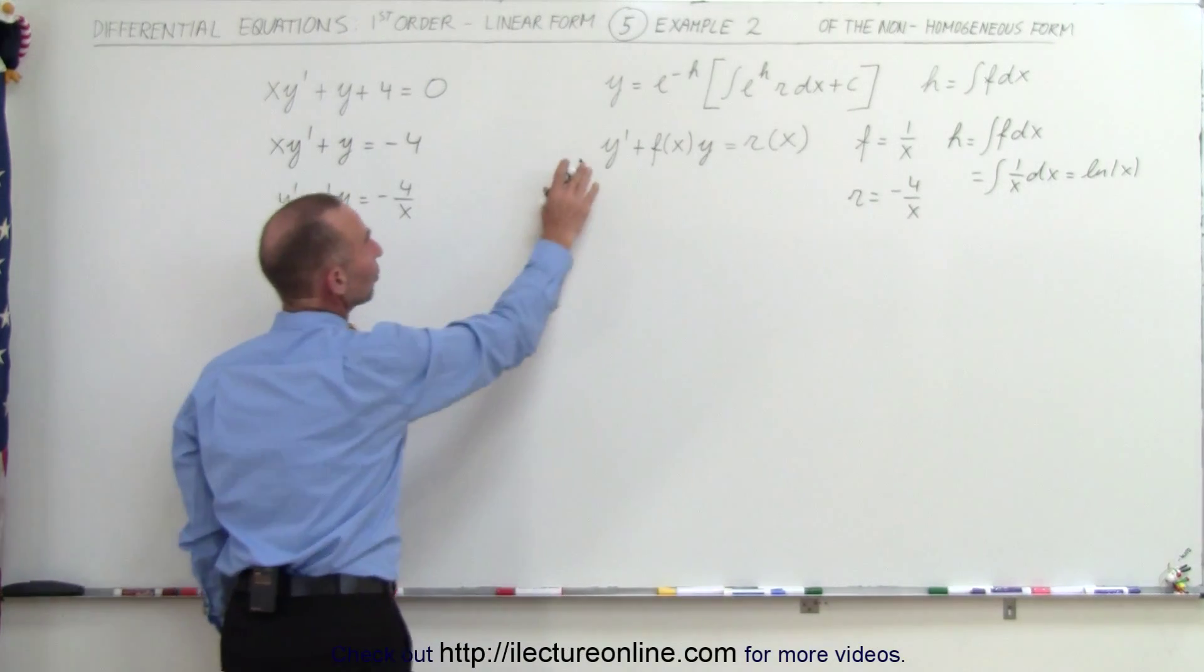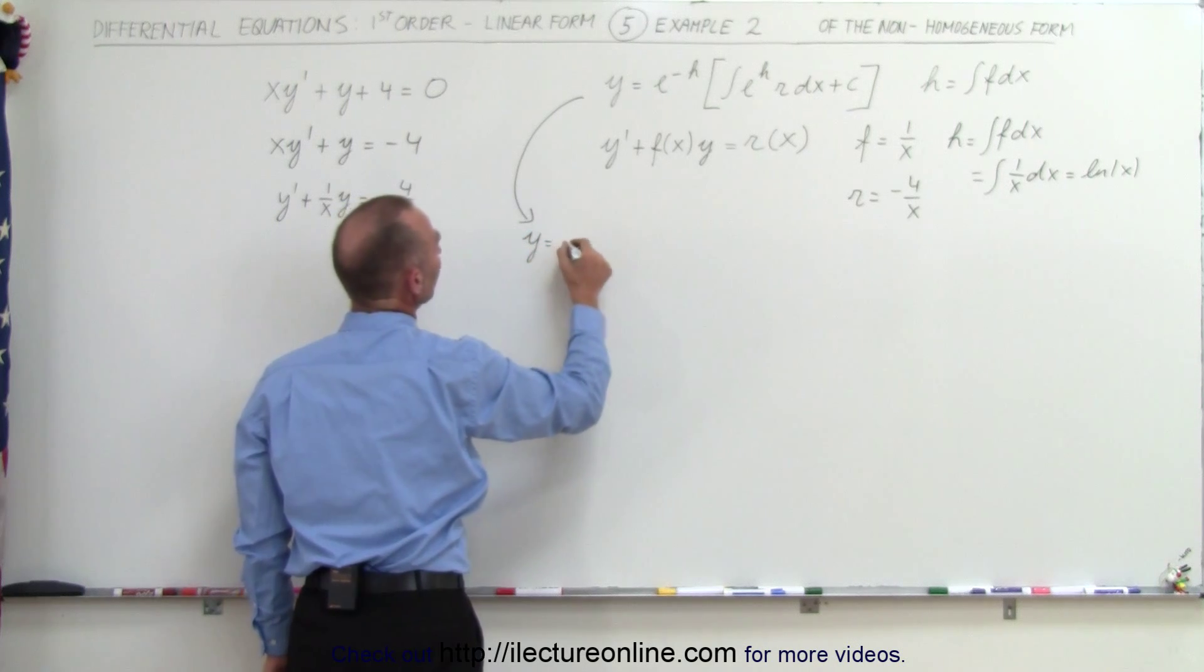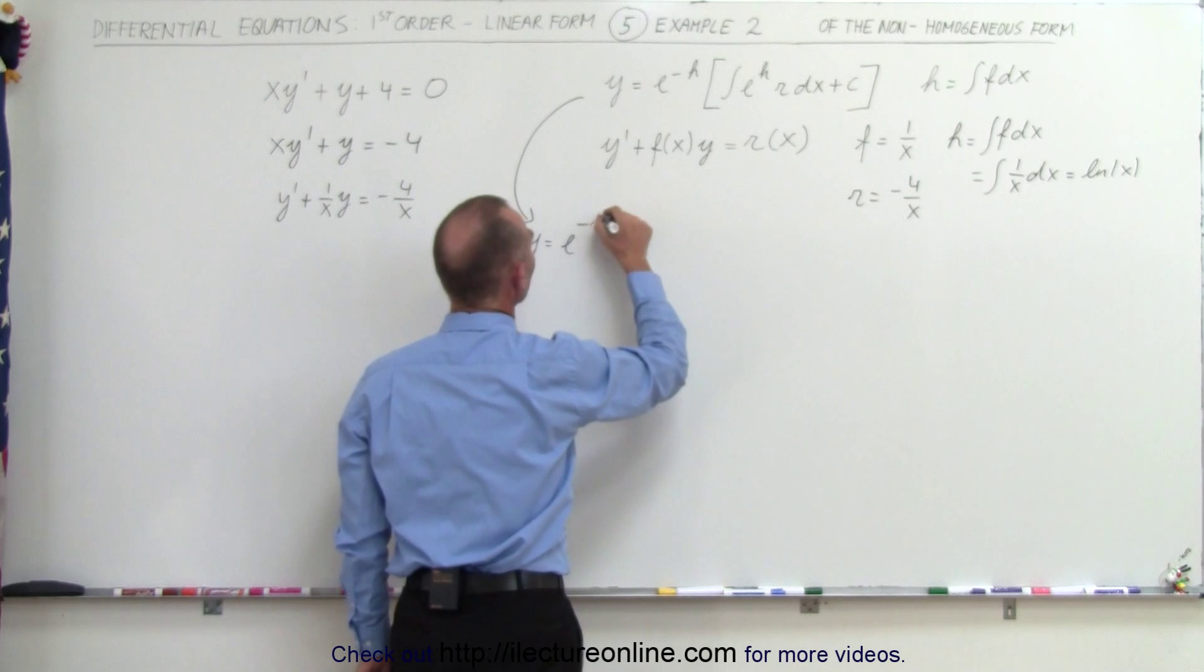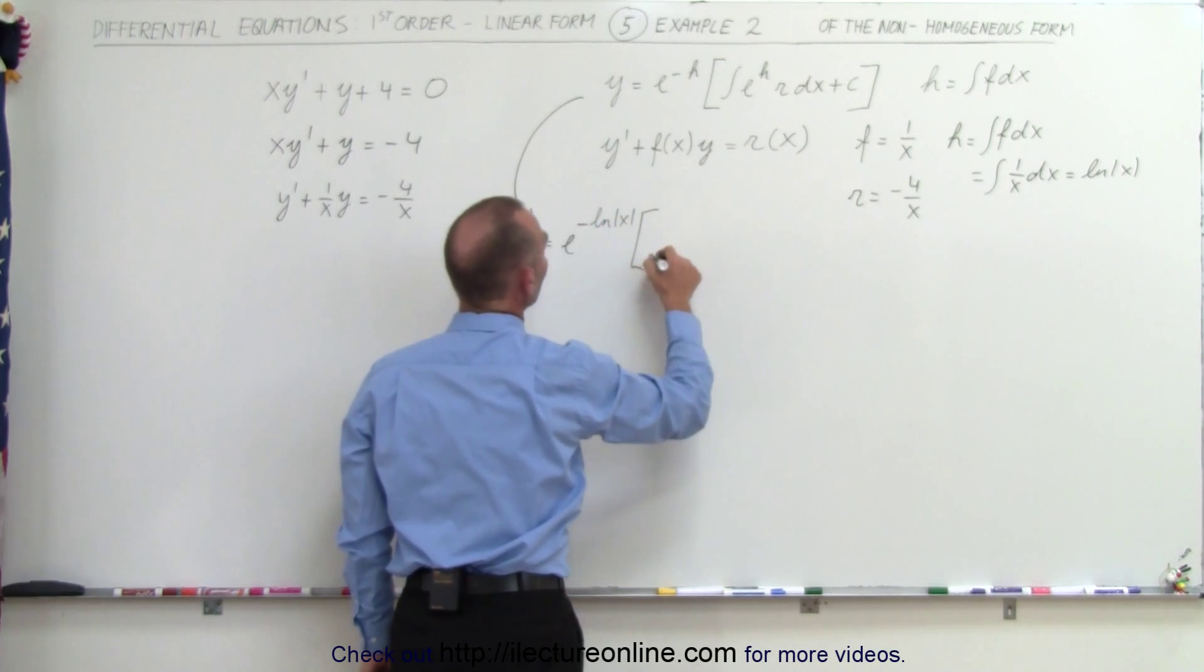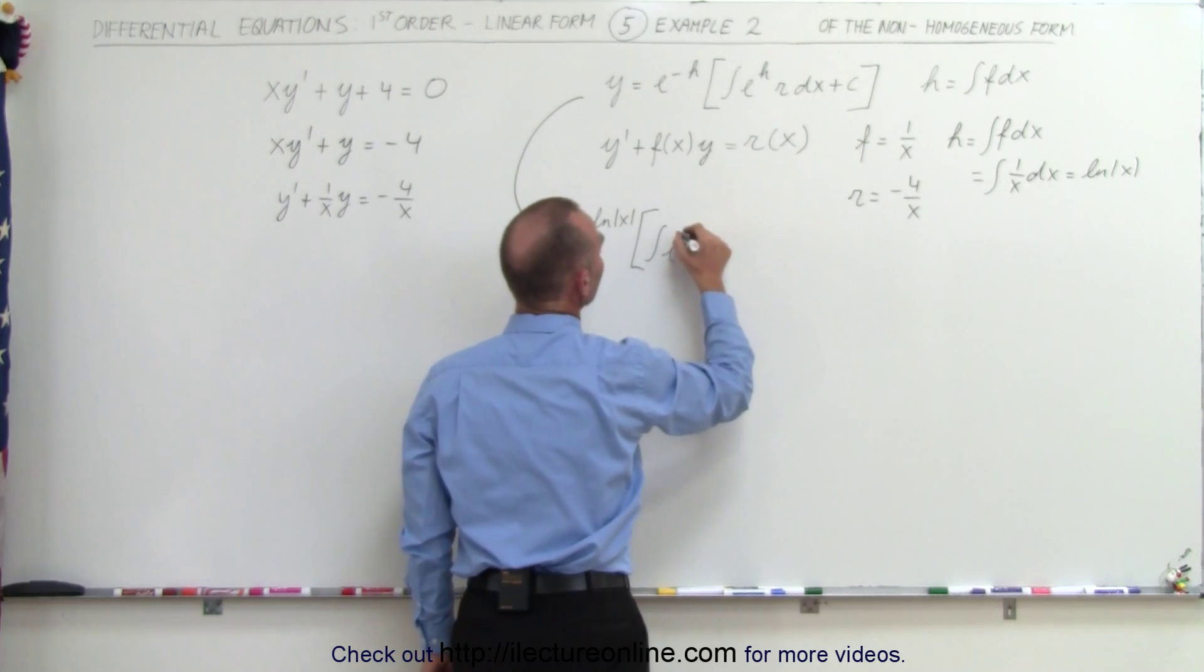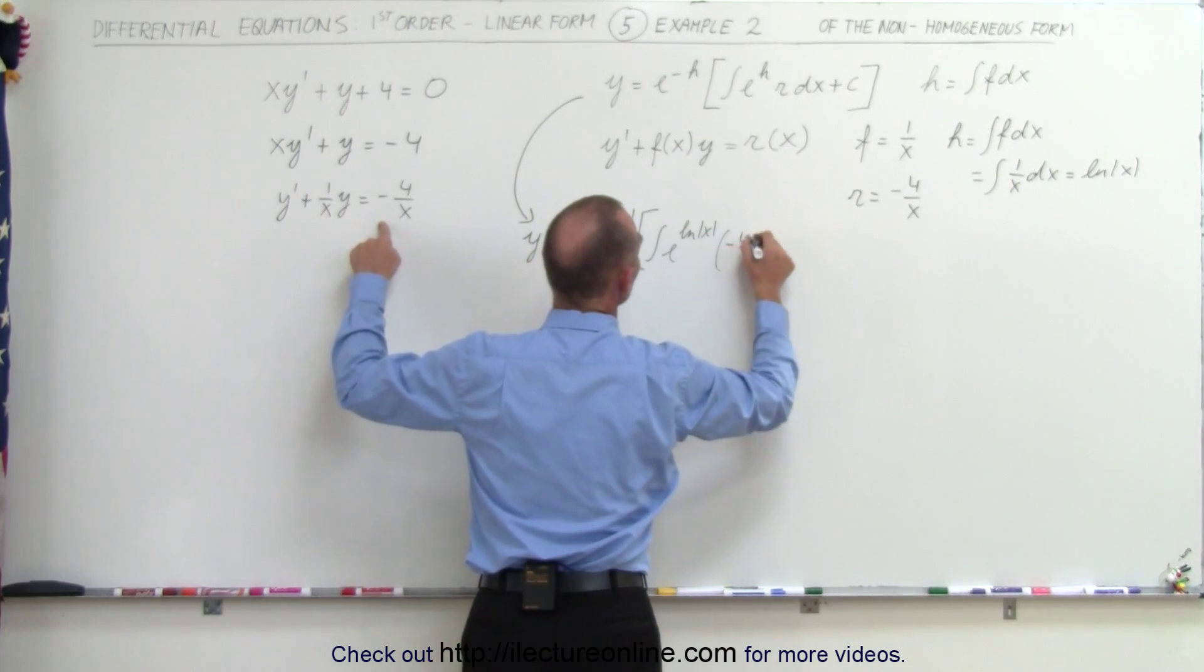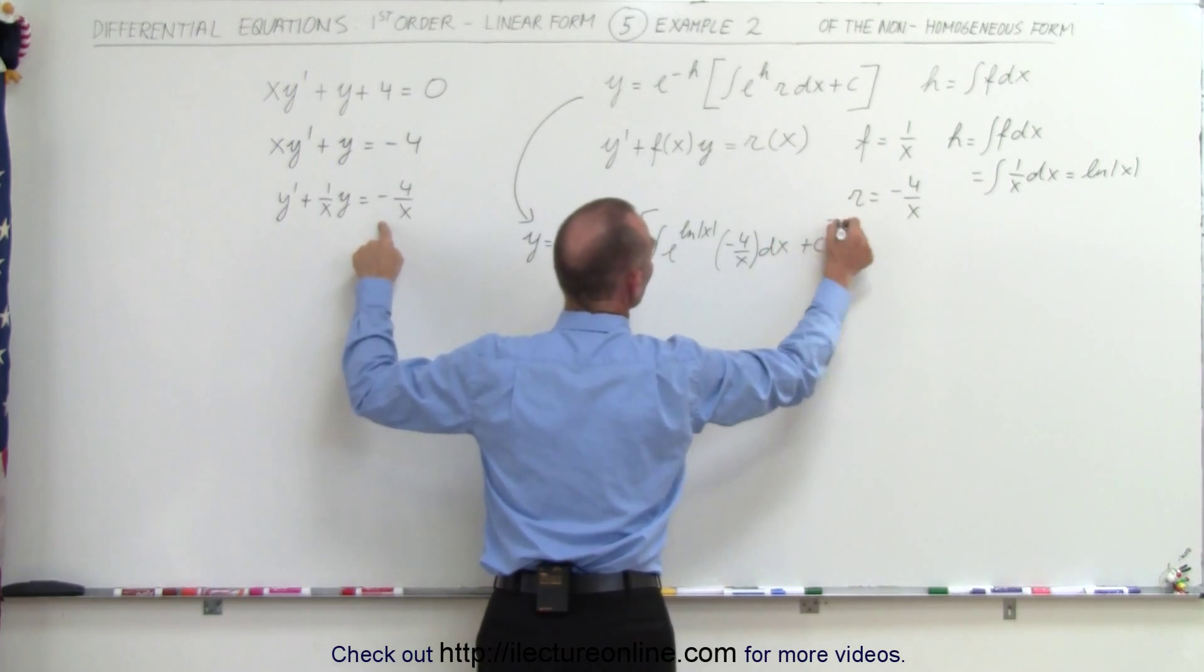So coming over here with the general solution, we can then say that y is equal to e to the minus h, and h is equal to the natural log of x times the quantity, the integral of e to the h, which would be e to the natural log of x times r, and r is equal to minus 4 over x times dx, plus a constant of integration.